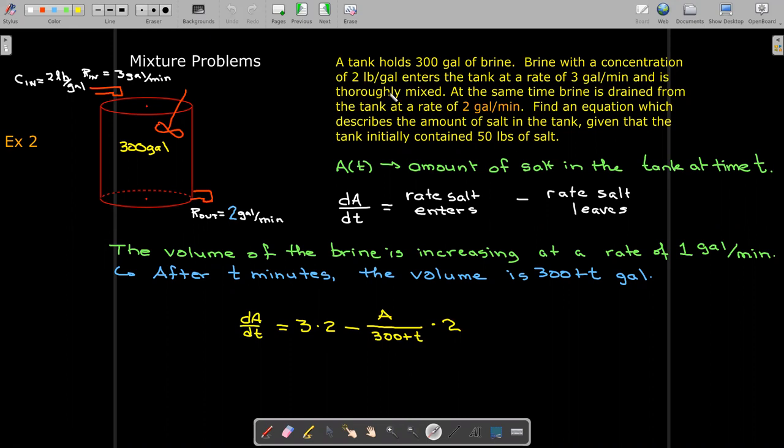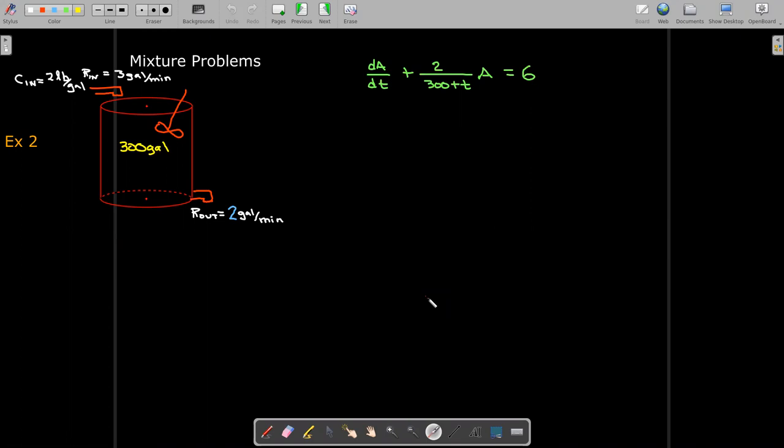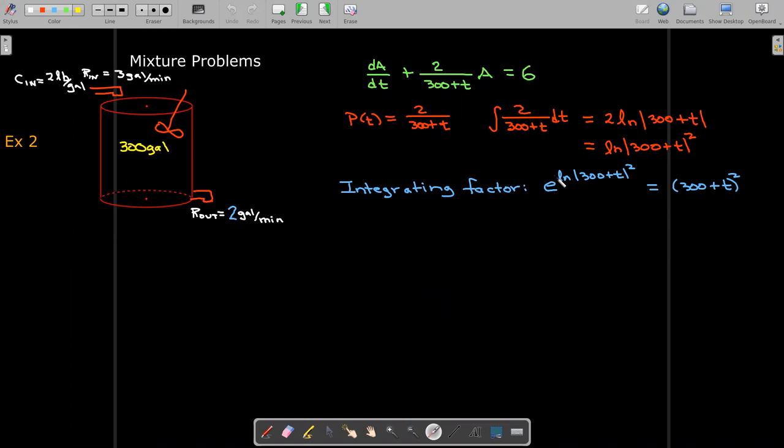So can we still solve this differential equation? All right, let's set it up. That means that my integrating factor would depend on p of t, which is 2 over 300 plus t. Go ahead and integrate that. The output from the integral is not the integrating factor. We have to put that in the exponent of e.